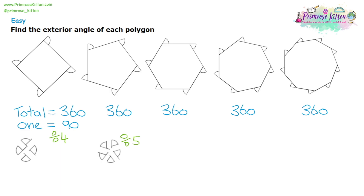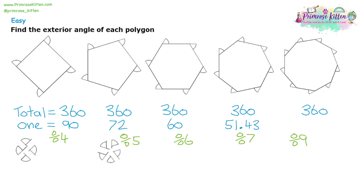For question two, we divide by five. For question three, we're dividing by six. For question four, dividing by seven. For question five, dividing by nine. So to get the size of one exterior angle, we just divide 360 by the number of sides the shape has. 360 divided by five gives us 72 degrees. 360 divided by six gives us 60 degrees. 360 divided by seven gives us 51.43 degrees — rounded to two decimal places. And 360 divided by nine is 40 degrees.